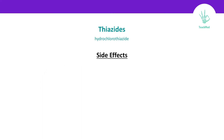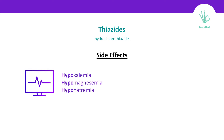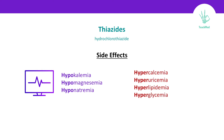Side effects: thiazide causes loss of sodium, potassium, as well as magnesium, which is why you should keep monitoring their electrolytes. On the other hand, it will increase the levels of calcium, urea, lipids, and glucose. So in someone with gout, hyperuricemia will worsen their case. In someone with diabetes, you don't want them to have hyperglycemia, so you should consider whether giving thiazide to these patients or not.